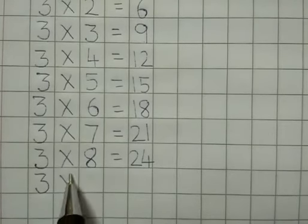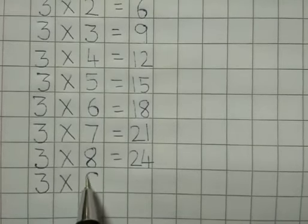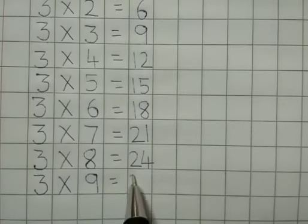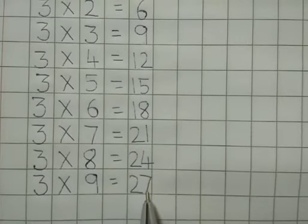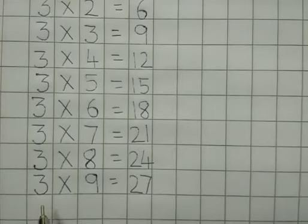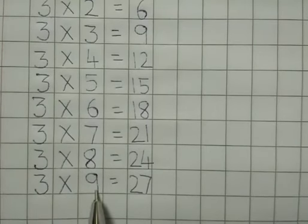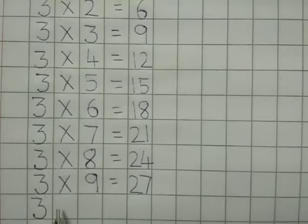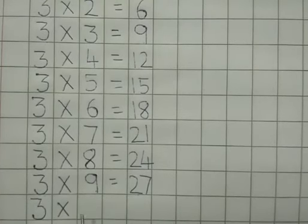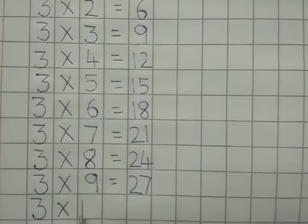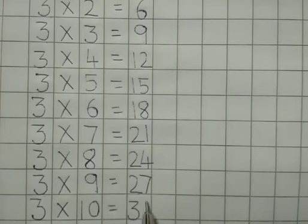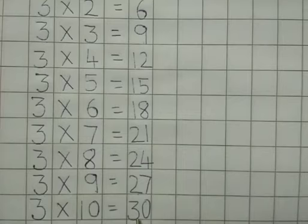Three — again this sign — nine is equal to twenty-seven. So how will you read? Three nines are twenty-seven. Three — the sign — ten is equal to thirty. Three tens are thirty.